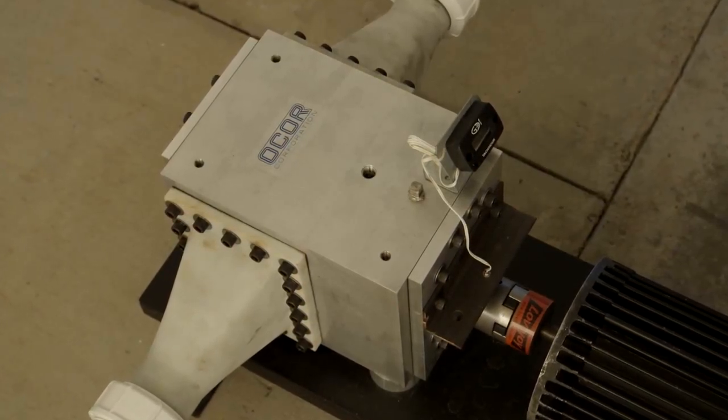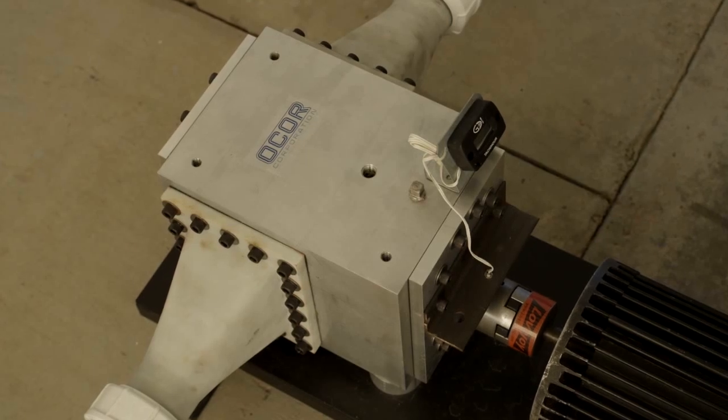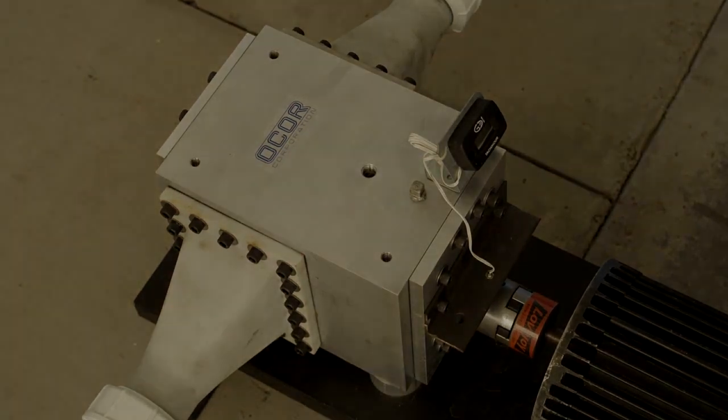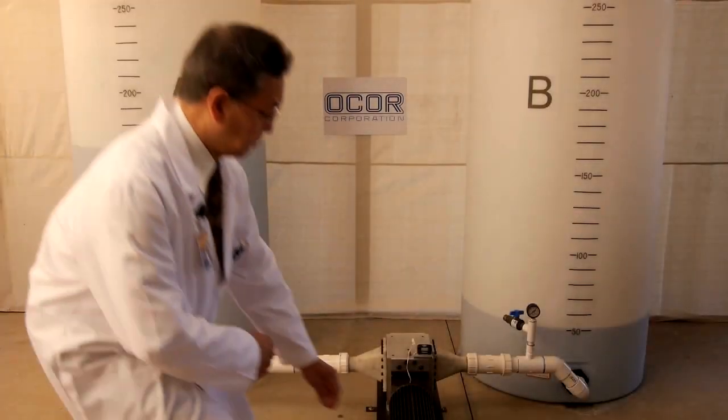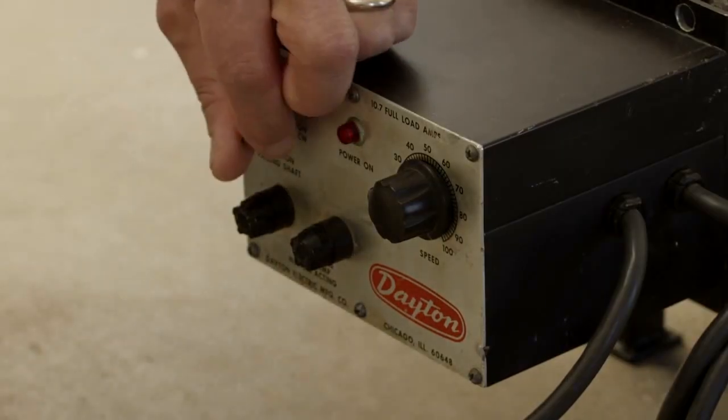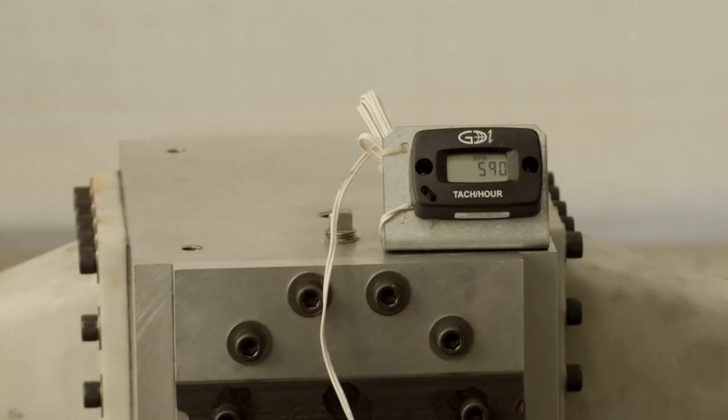An electronic tachometer is mounted on the pump end plate to monitor motor shaft speed. We are going to demonstrate a series of flow tests pumping approximately 50 gallons of colored water between tanks A and B.